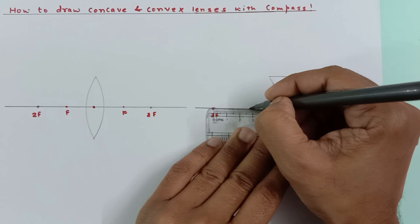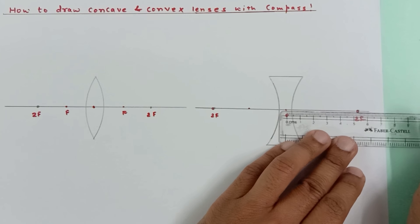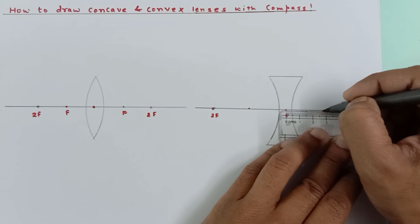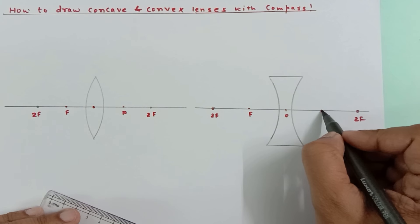Again, this distance is 5.6 again, so here, fine. So this point is F, and this point is F again.